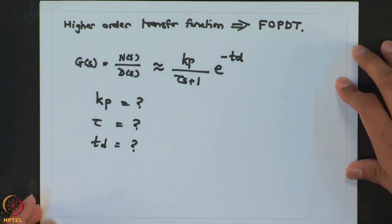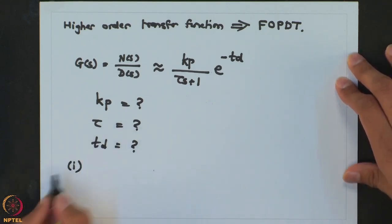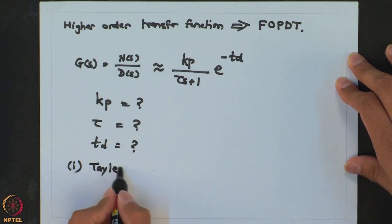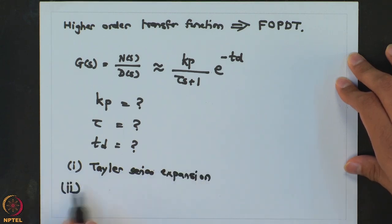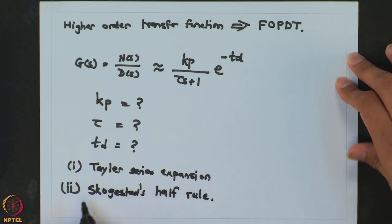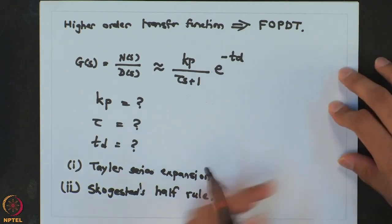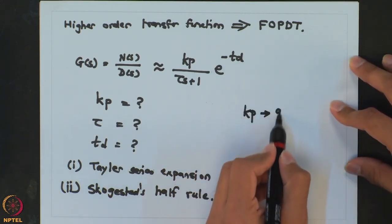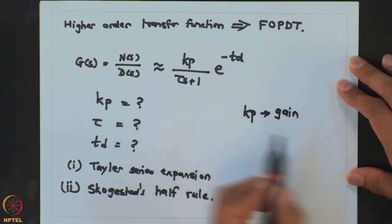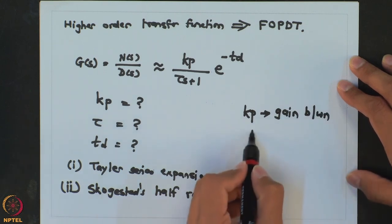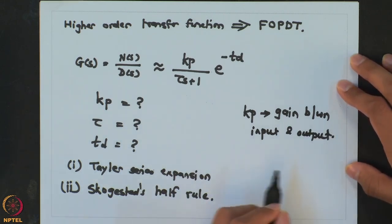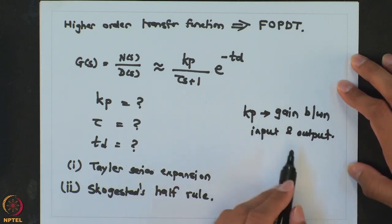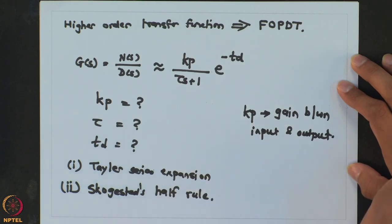There are two methods of doing this. The first method is based on Taylor series expansion and the other method is Skogestad's half rule. In both cases the notion of Kp is the same — Kp is the gain between input and output. For the given transfer function, whatever is the gain between input and output, that same gain gets transferred to the final approximate form.